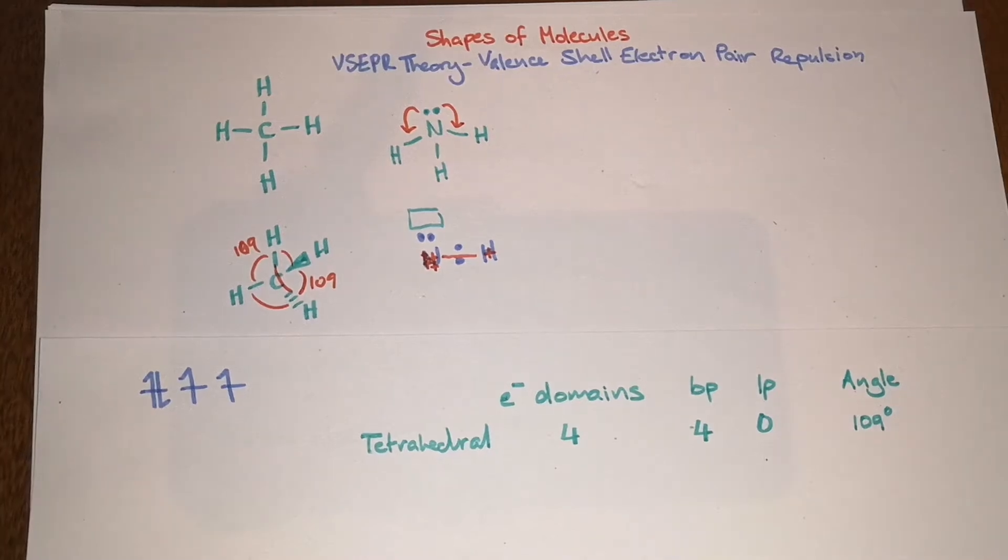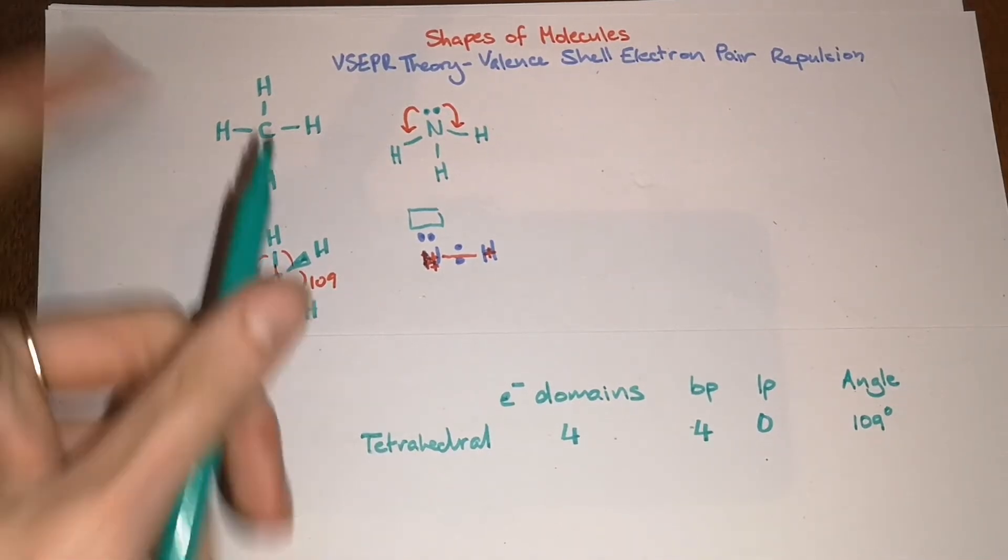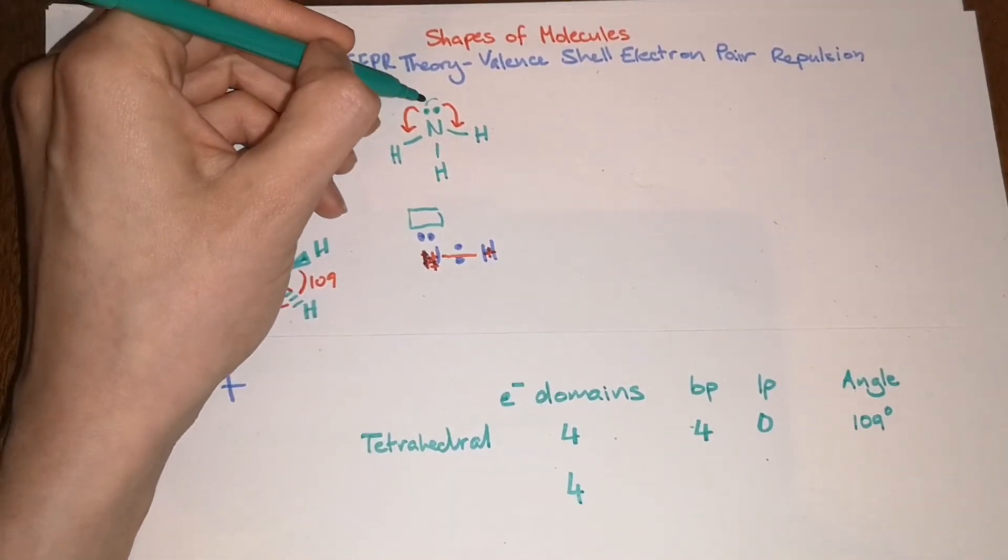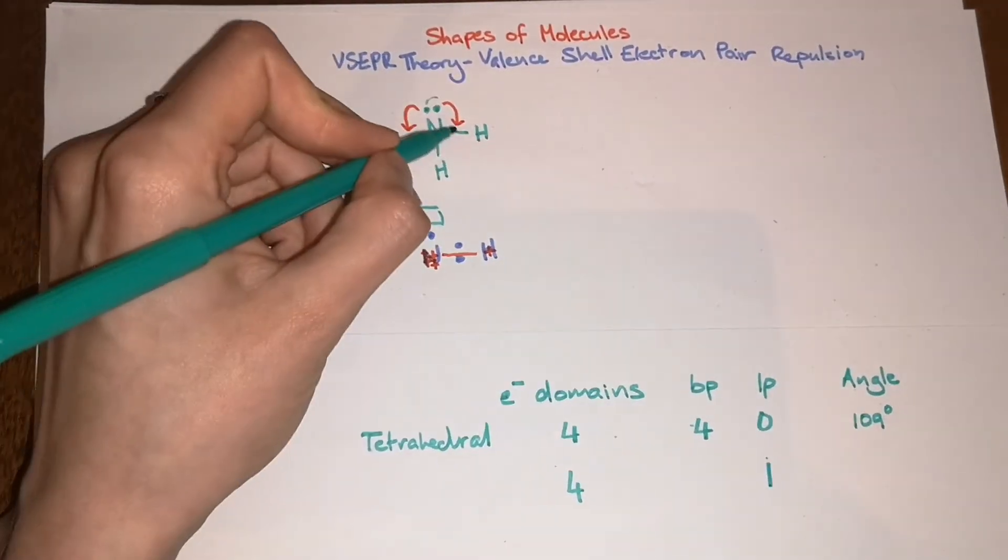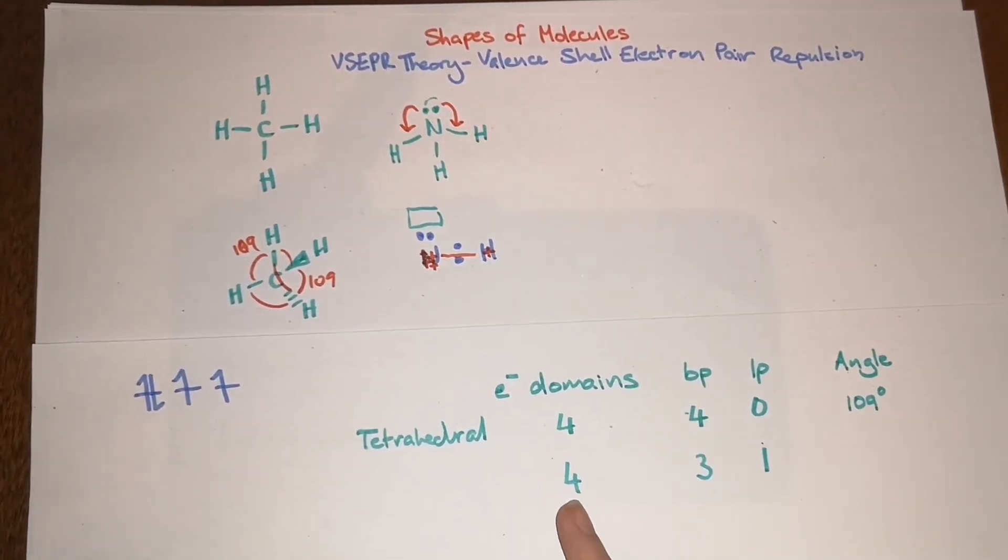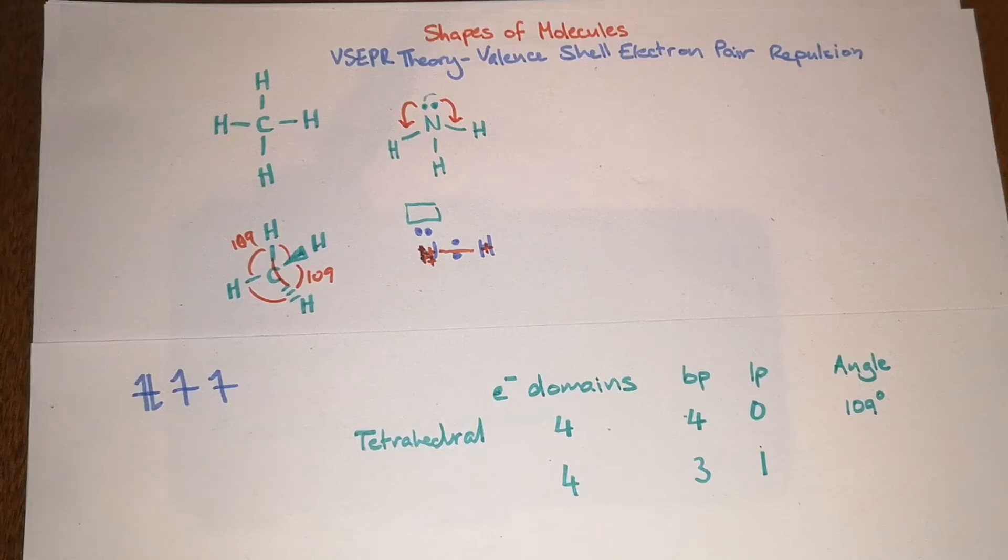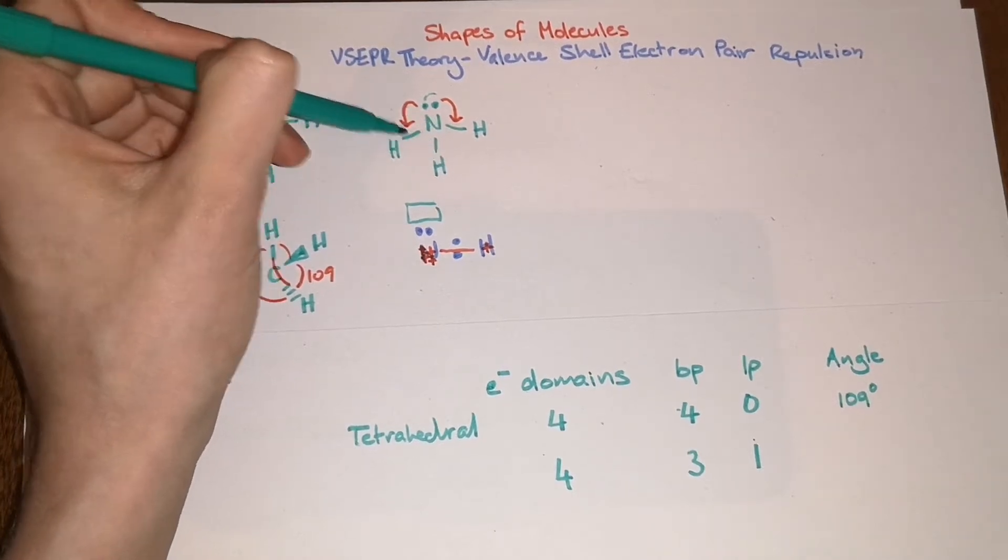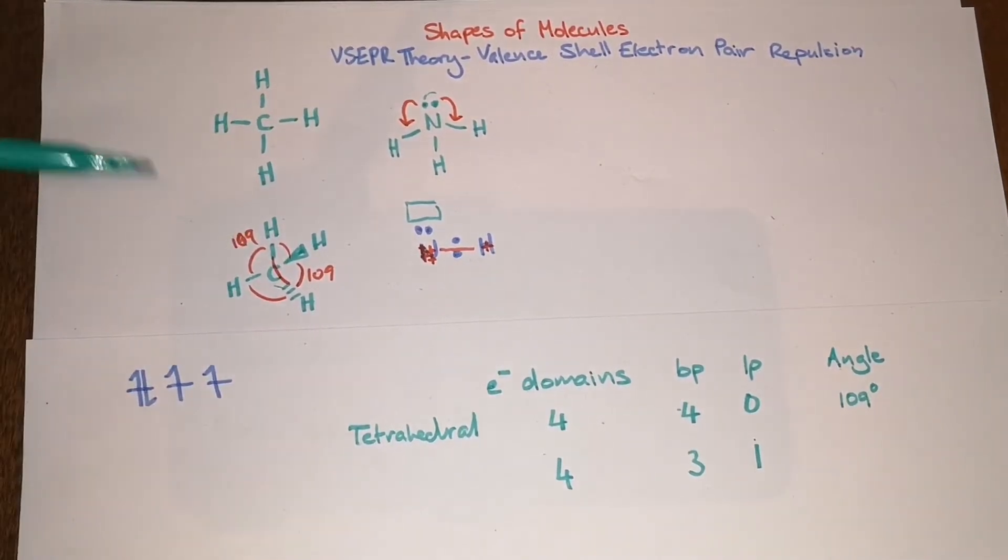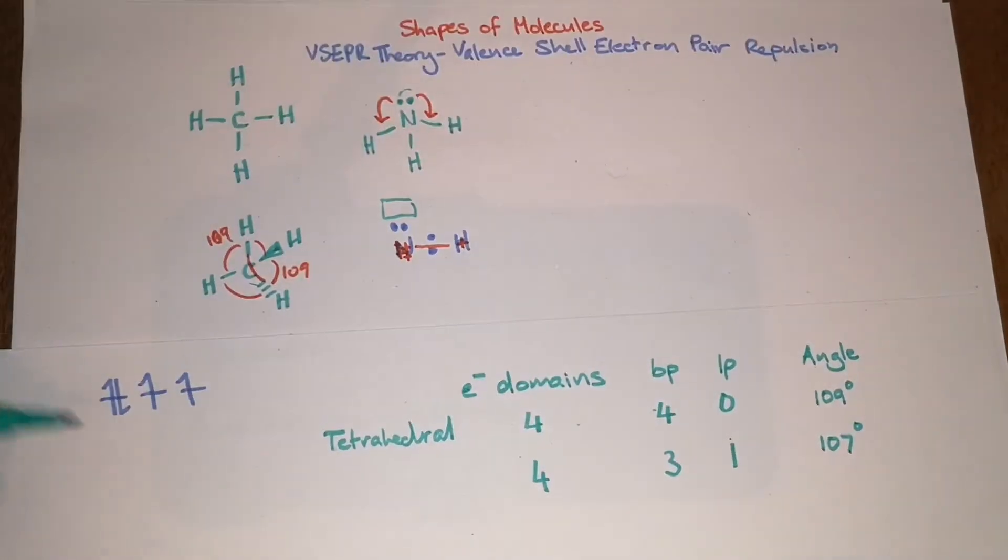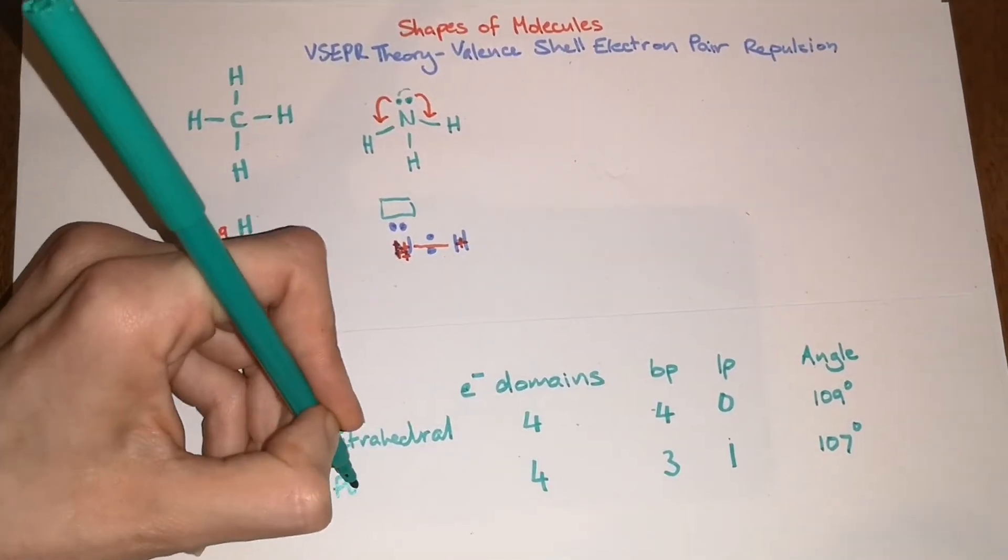Ammonia has four electron domains, so it has one lone pair and has three bond pairs. Because of the fact that it has four electron domains many people just assume it's probably tetrahedral as well but it's not because all of these hydrogens are pushed closer together than they would be in the case of methane. In this case the bond angle is 107 degrees and the shape is referred to as pyramidal.